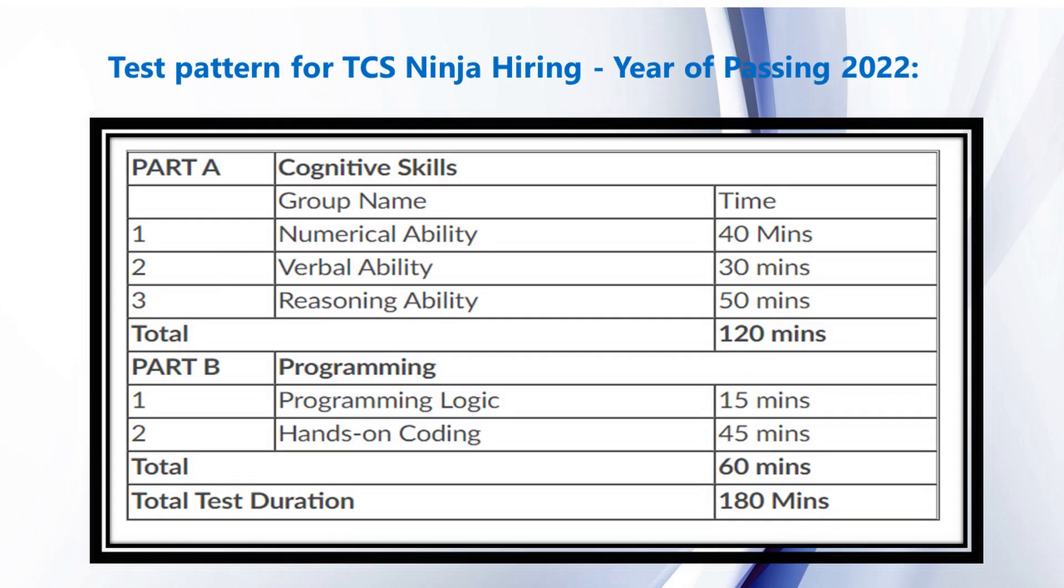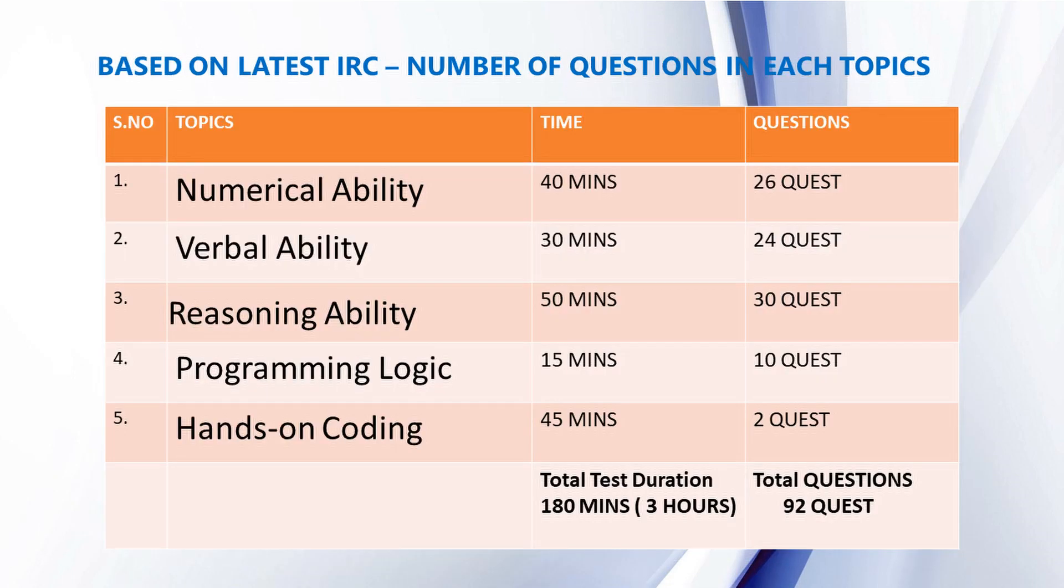Test pattern for TCS Ninja hiring: Numerical Ability 40 minutes, Verbal Ability 30 minutes, Reasoning Ability 50 minutes, Programming Logic MCQ 15 minutes, and Hands-on Coding 45 minutes. Total test duration is 180 minutes.